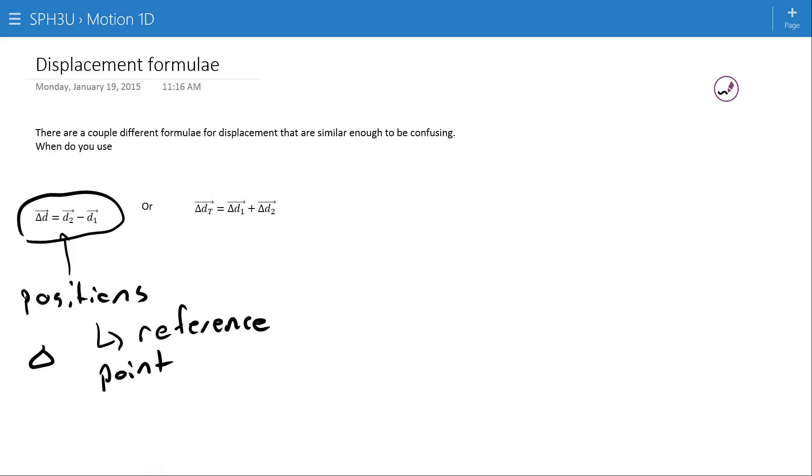Alternatively here, delta D1 and delta D2, this formula is for finding a total displacement from individual displacements. So here we have these deltas, which indicate a change in position or an actual movement.